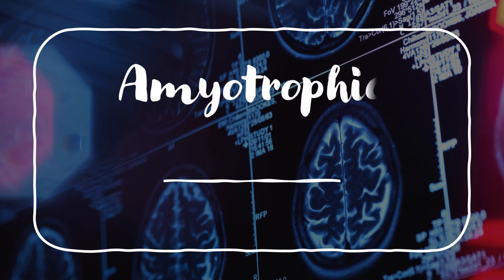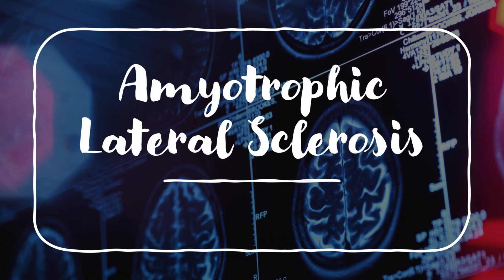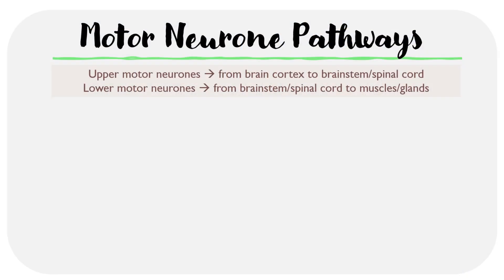Today we're going to be taking a look at amyotrophic lateral sclerosis, which is the most common form of motor neuron disease. To fully understand ALS or any type of motor neuron disease, it's first important to take a look at the upper and lower motor neuron pathways. We have a cross section of the brain here to explain this diagrammatically.